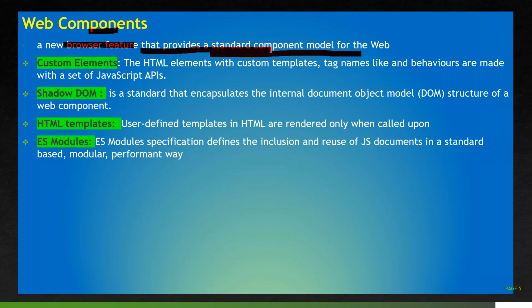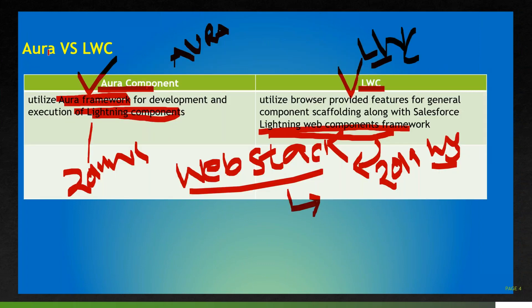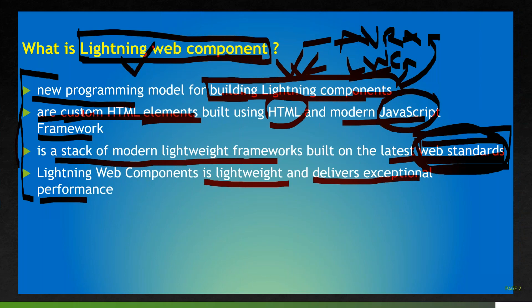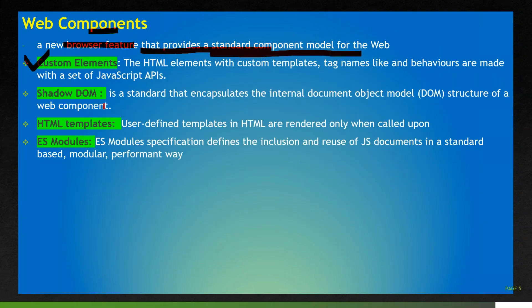It's a new browser feature which provides a standard component model for the web. In this web component there are a few elements to be considered: custom elements — like Lightning Web Components, which are custom HTML elements built using HTML and modern JavaScript — shadow DOM, HTML template, and ES modules. If your development satisfies all these points, we can say it's a web component.